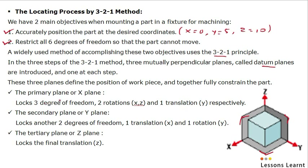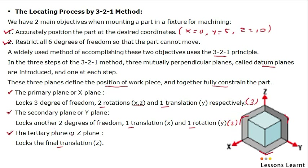Coming back to the point — these three planes define the position of the workpiece and also fully constrain the part. The three planes are: primary plane, secondary plane, and tertiary plane. When we constrain the primary plane, it locks two rotational degrees of freedom and one translation — totally three degrees of freedom. When we constrain the secondary plane, it locks one translation and one rotation — two degrees of freedom. And when we constrain the third plane, it locks the final translation — one degree of freedom. That means it is the 3-2-1 method.